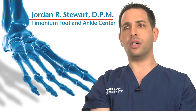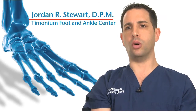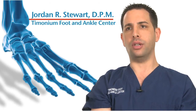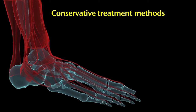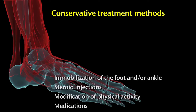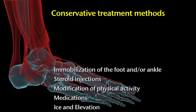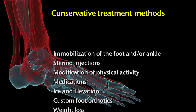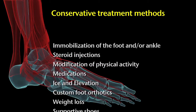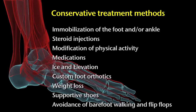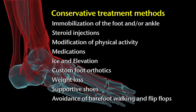Conservative care is the first line of treatment for tarsal tunnel syndrome, and I will exhaust all conservative care prior to recommending surgical intervention. Conservative care includes immobilization of the foot and or ankle, steroid injections, modification of physical activity, medications, ice and elevation, custom foot orthotics and bracing, weight loss, and support of shoe gear and avoidance of barefoot walking and flip flops.